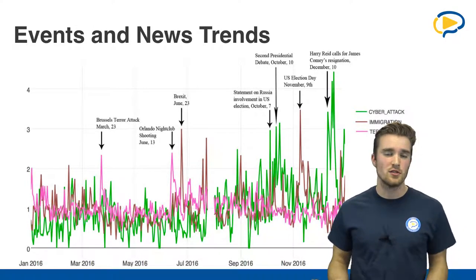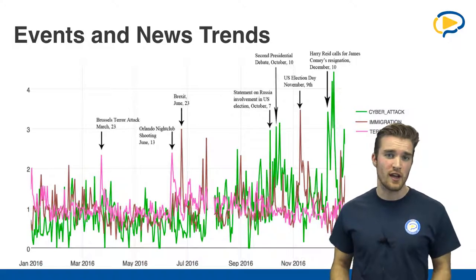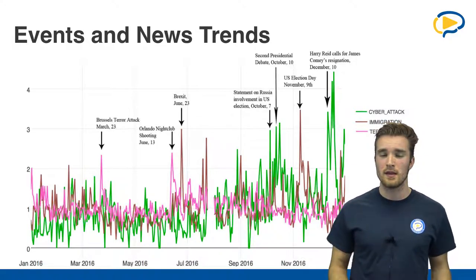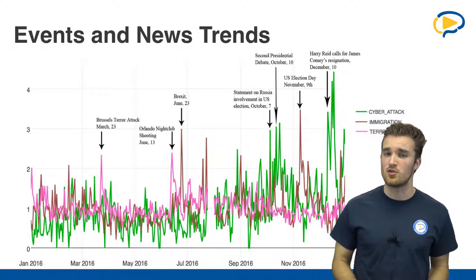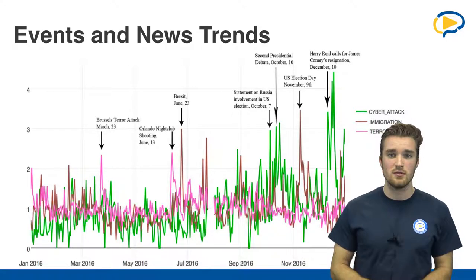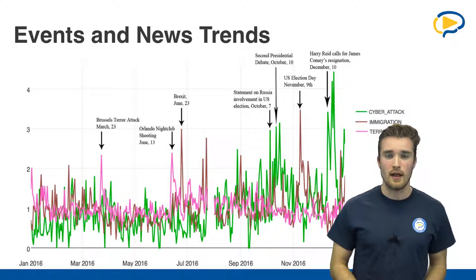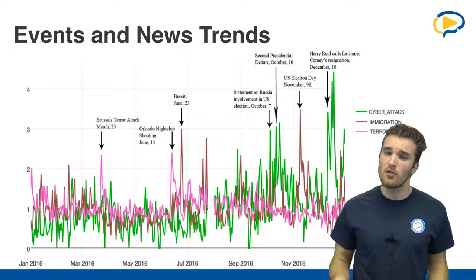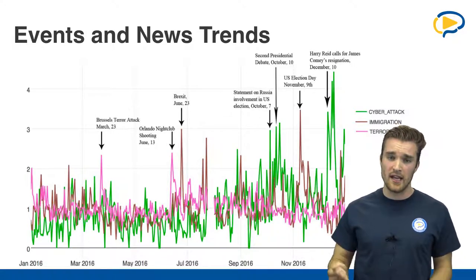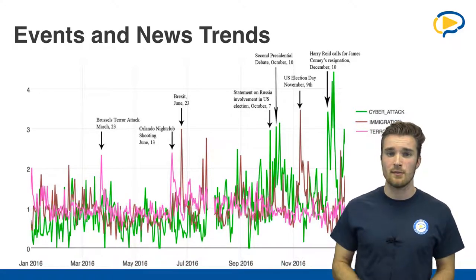As Rene already told you, we are interested in the relationship between events happening in the real world and certain news frames that follow these events. As you can see on this slide, we recorded spikes in certain news themes — themes that could capture anything from vaccination, terror, to immigration. You can see a huge spike in the terror theme around March 23rd, which coincidentally happened when the Brazil terror attack happened. We see a similar spike in terror themes on June 13th when there was the Orlando nightclub shooting.